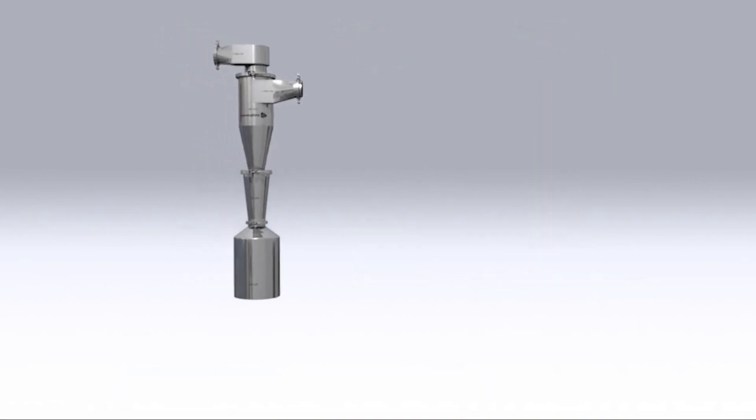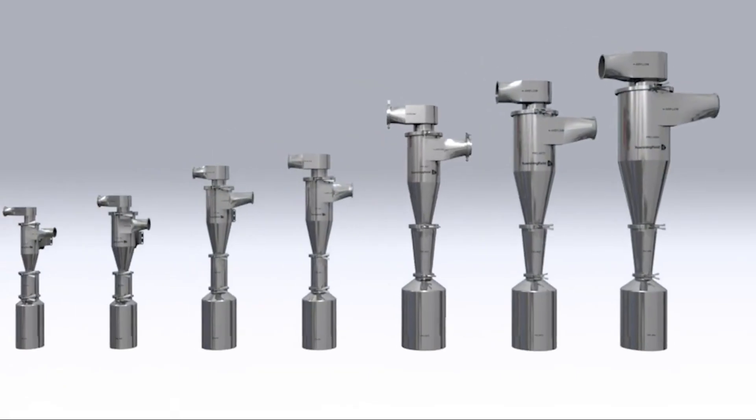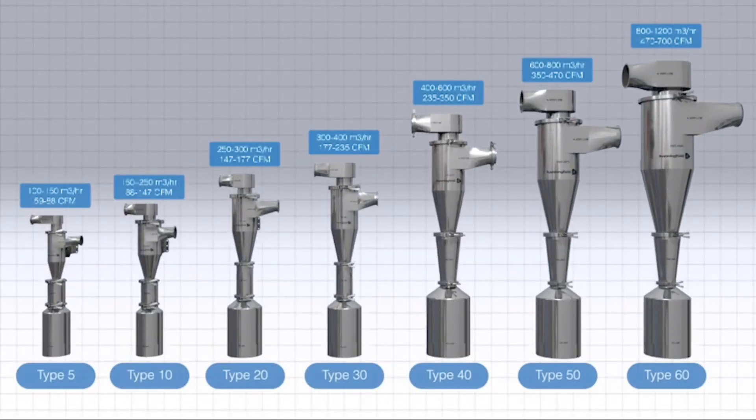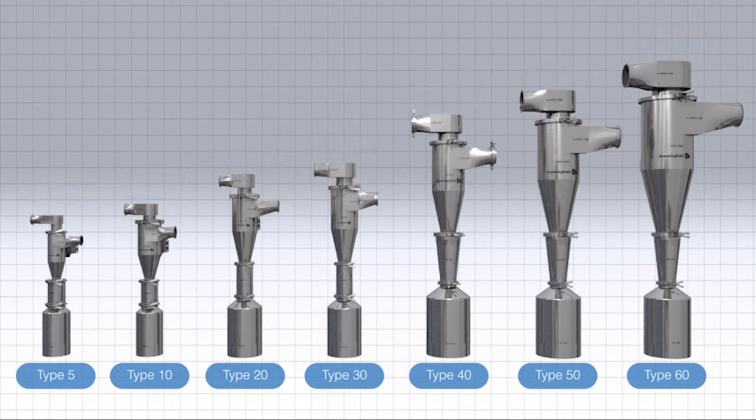The standard range of cyclones are designed for applications in the range of 100 to 1200 cubic meters per hour, or 50 to 700 CFM. Hanningfield can also design custom cyclones for any airflow outside this range.